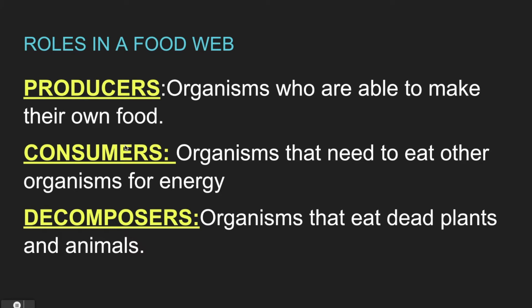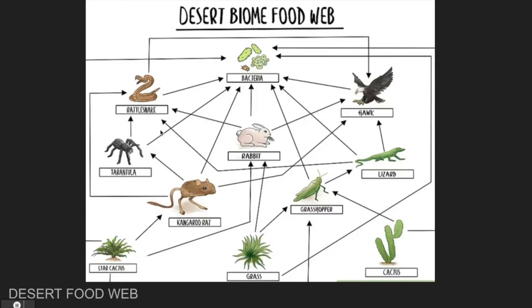The other type of role in a food web is consumers. Consumers are all those organisms that need to eat other organisms for energy. There are different types of consumers that we'll talk about next. If we look at our food web, we see that a grasshopper, the kangaroo rat, tarantula, rattlesnake, rabbit, lizard, and hawk are all examples of consumers because whether they're eating a plant or another animal, they have to eat something else to get their energy. That is what a consumer does.